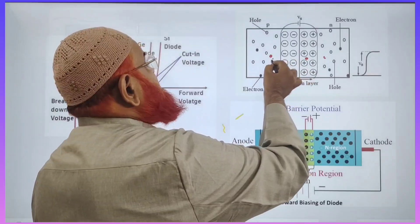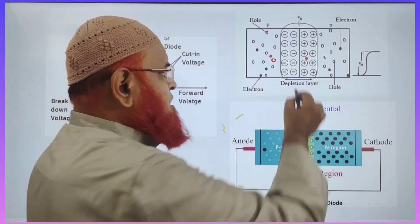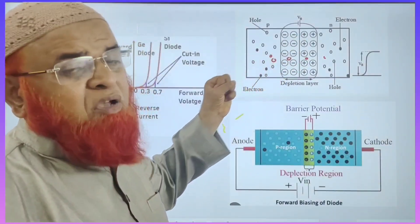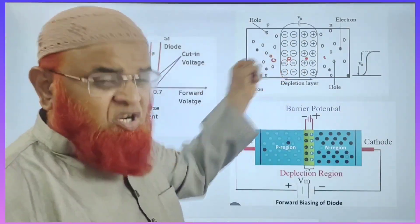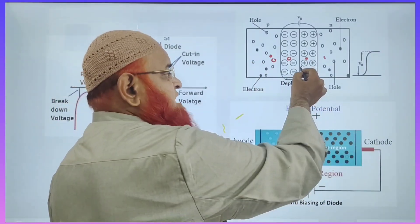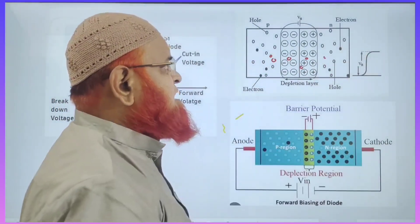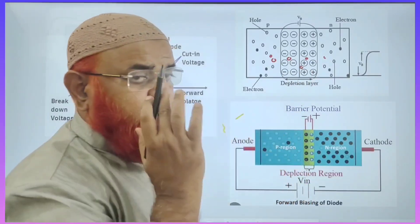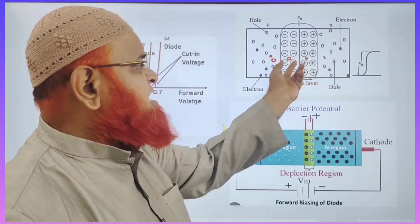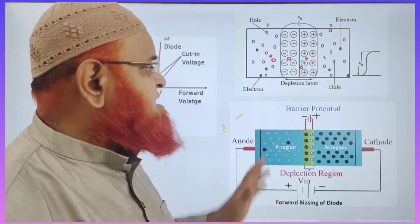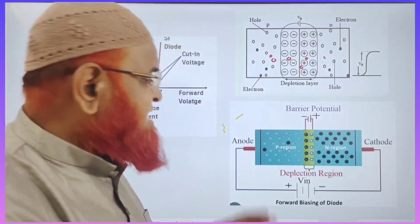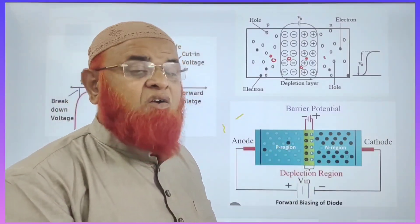For example, these are holes here. This hole trying to cross the junction — these negative ions will drag the positive hole, will stop the positive hole, hold the positive hole here. And if the positive hole tries to escape to the junction, these positive ions will push the holes because holes are positively charged. Hence, there is no mobility, no further movement. That's why it is called as potential barrier — barrier means just like a wall. Does not allow further movement of electrons and holes.